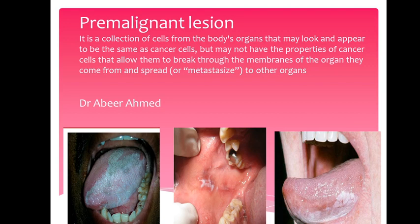Let's start now. A pre-malignant lesion is a condition — a collection of cells from the body's organ that may look and appear to be the same as cancer cells, but may not have the properties of cancer cells that allow them to break through the membranes of the organ they come from and metastasize — that is, spread — to other organs. Cancer is dangerous because it spreads from one organ to another all over the body.